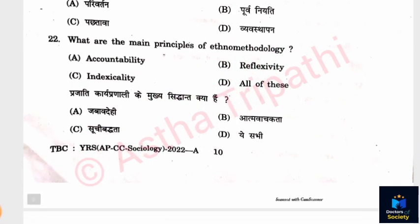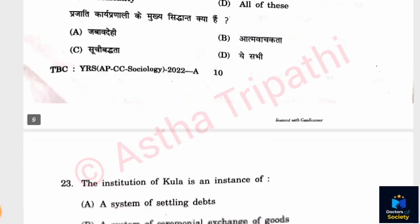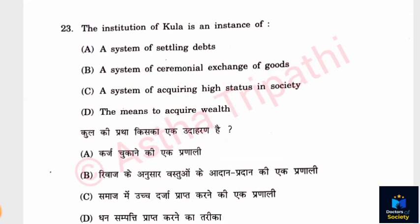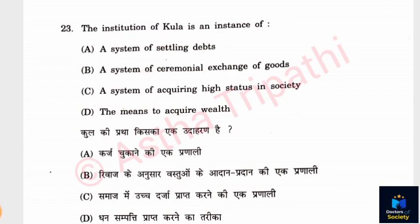Question 22: What are the main principles of ethnomethodology? Options: Accountability, Reflexivity, Indexicality, All of these. The answer is D — All of these. Question 23: The institution of Kula is an instance of what? Options: A system of settling debts, a system of ceremonial exchange of goods, a system of acquiring high status in society, the means to acquire wealth. The answer is B — a system of ceremonial exchange of goods.